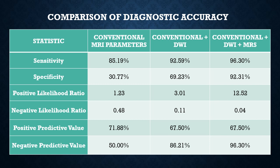Comparing diagnostic accuracies, sensitivity significantly increased after addition of diffusion-weighted imaging and spectroscopy findings to conventional MRI parameters, reaching a peak of 96.3%. Specificity also increased accordingly. The positive and negative likelihood ratios improved with the addition of DWI and MRS, and the negative predictive value significantly increased with the addition of both. However, positive predictive value remained highest with conventional MRI parameters alone.